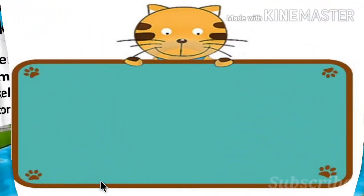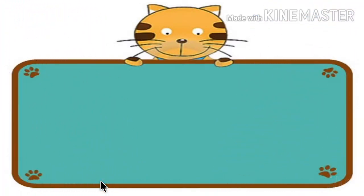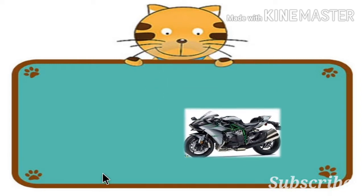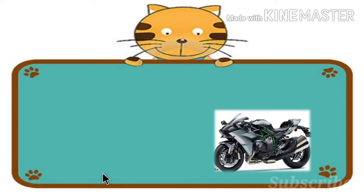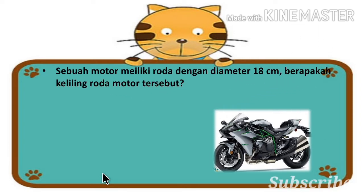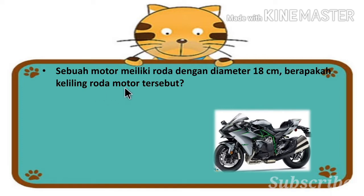Pada video sebelumnya kita sudah belajar tentang rumus keliling lingkaran. Sekarang kita akan belajar mengenai soal cerita untuk menghitung keliling lingkaran. Sebuah motor memiliki roda dengan diameter 18 cm. Berapakah keliling roda motor tersebut?